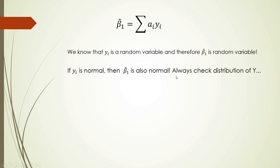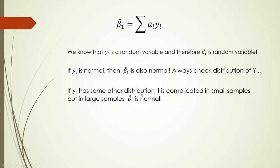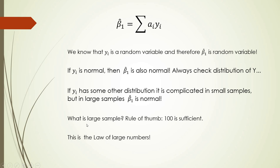This is the proof that if Y_i is a random variable, therefore beta 1 hat is also a random variable that follows some theoretical distribution — in our case, normal distribution. So if Y_i has a normal distribution, then beta 1 hat is also normal. It is always advisable, at the beginning of developing the model, to check the distribution of Y_i. If the sample is large enough — at least 100 data units by the rule of thumb — beta 1 hat will be normal anyway. This is the implementation of the law of large numbers.